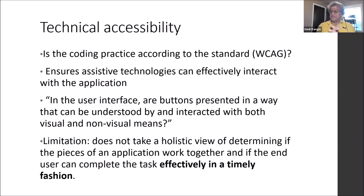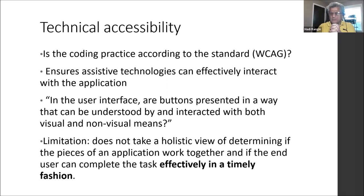In technical accessibility, we focus on the coding practices for particular elements — for example, whether a button, menu, or text box has been coded according to the standard. It ensures that any user, including mouse users and assistive technology users, can properly interact with that element. However, it does not give us a holistic view of the page; it just tells us if a particular element we're investigating is accessible or not.